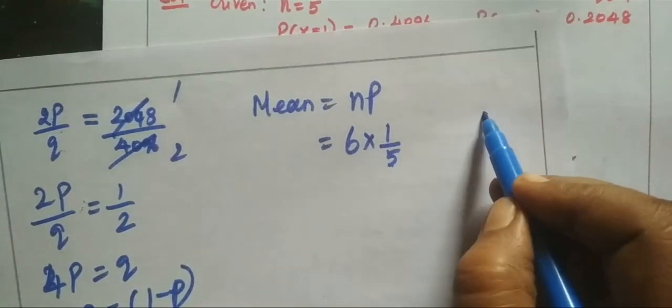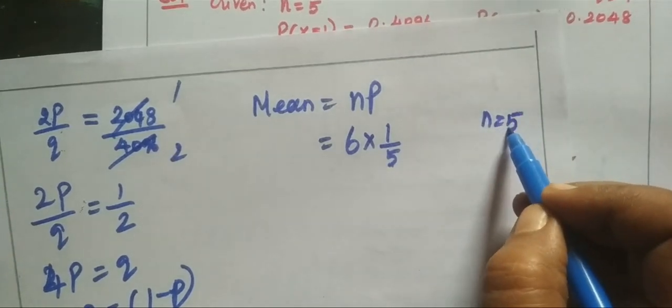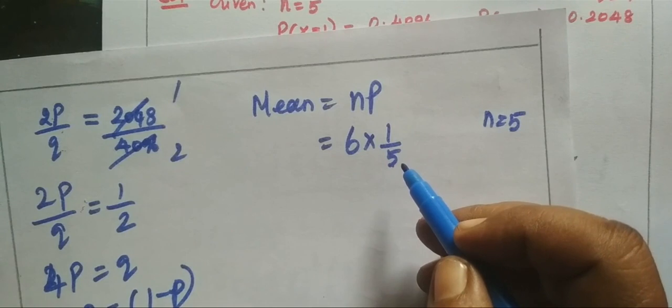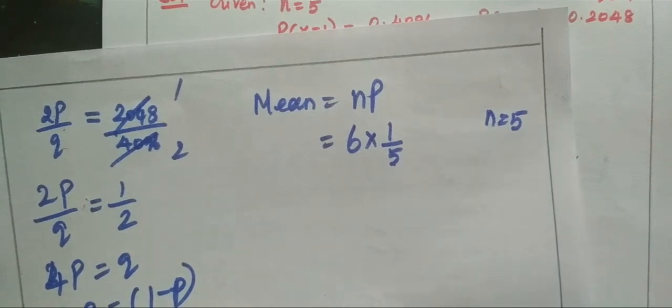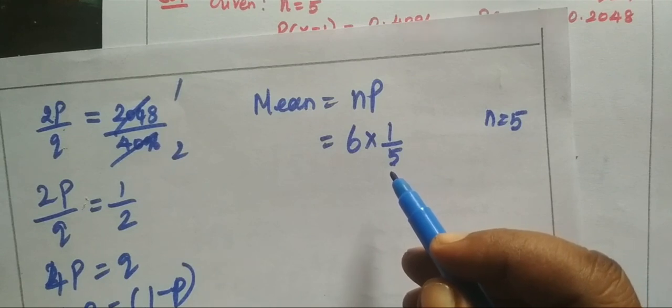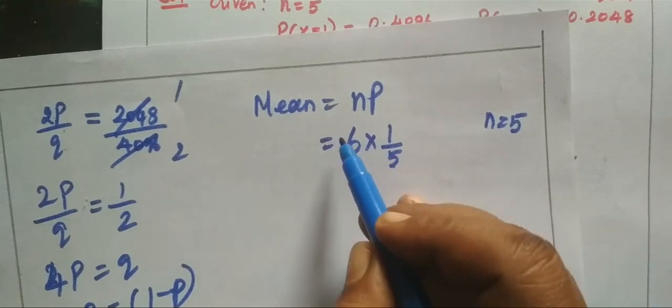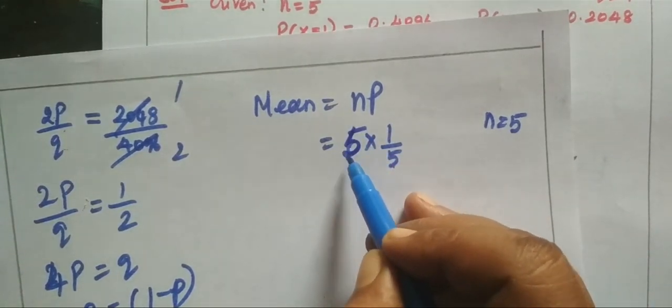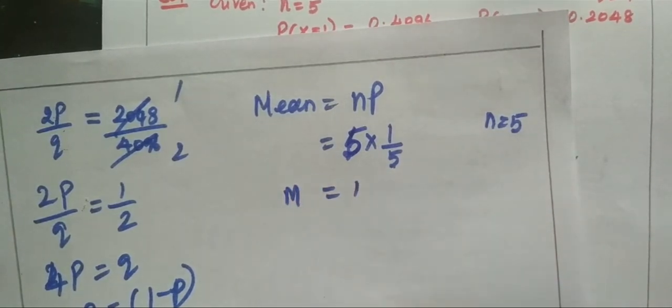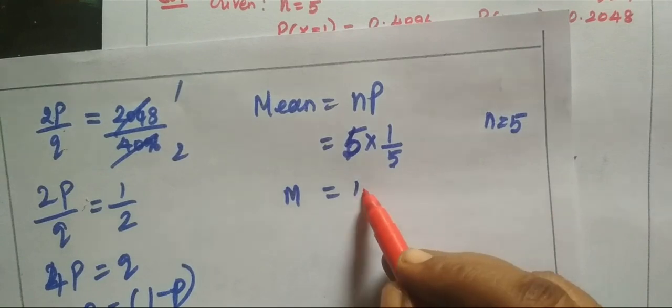So, 5 times 1 by 5. The 5 cancels. Therefore, mean value is 1. The answer is correct.